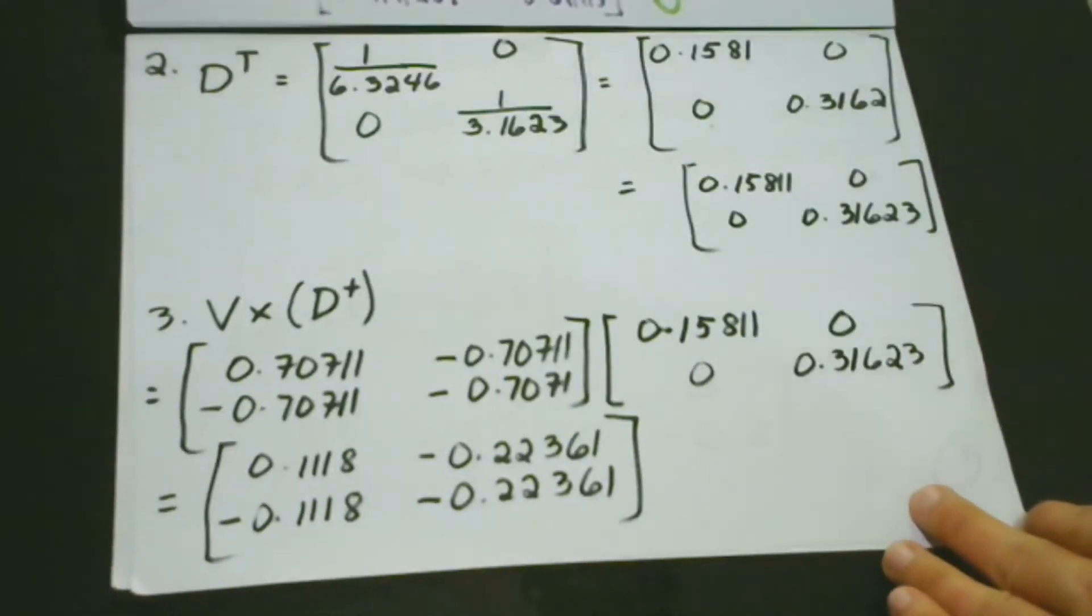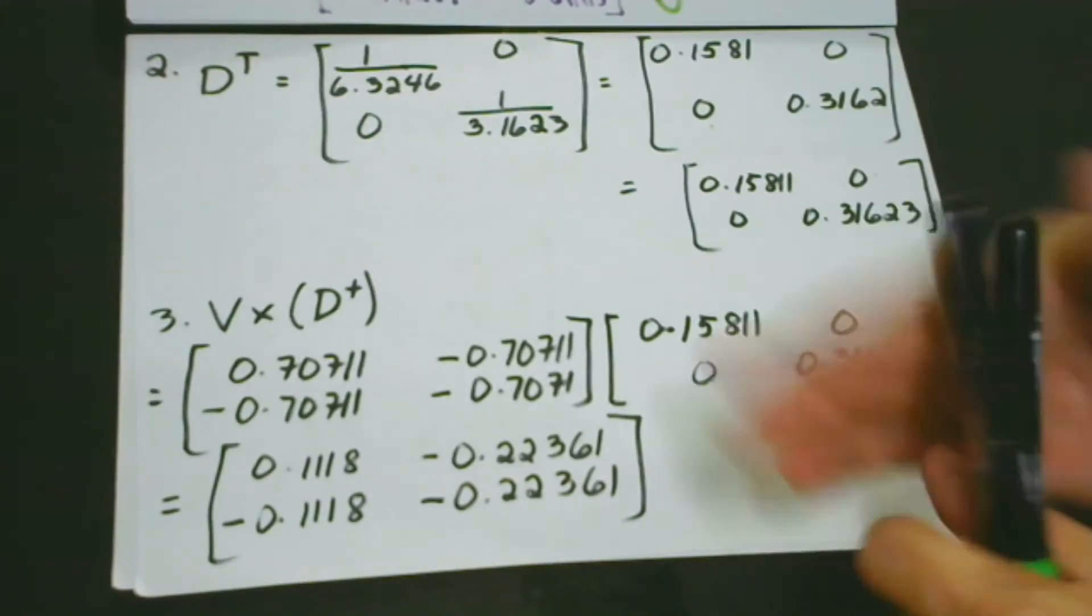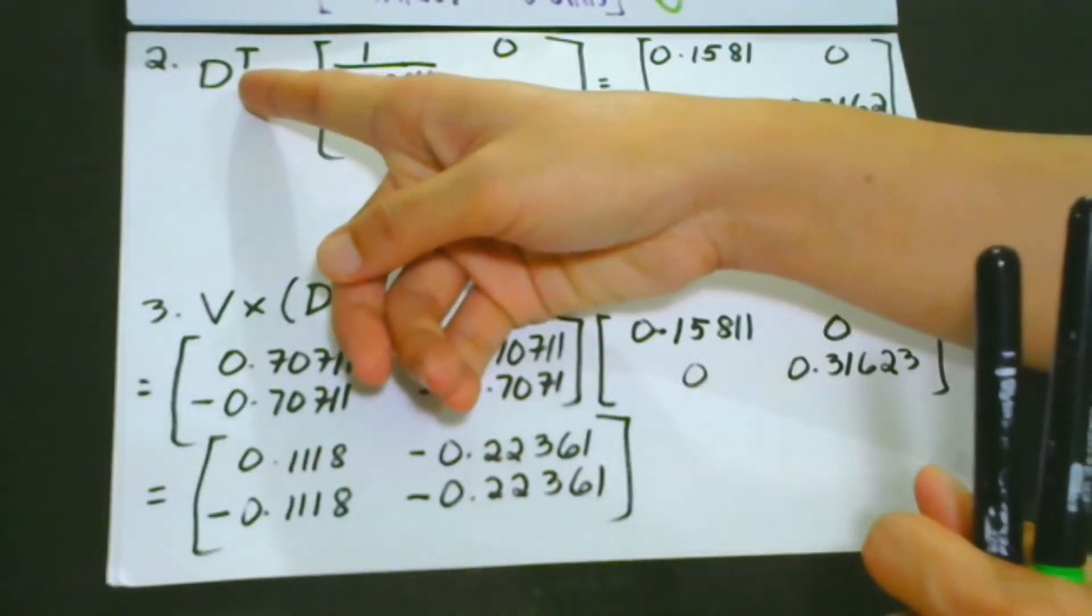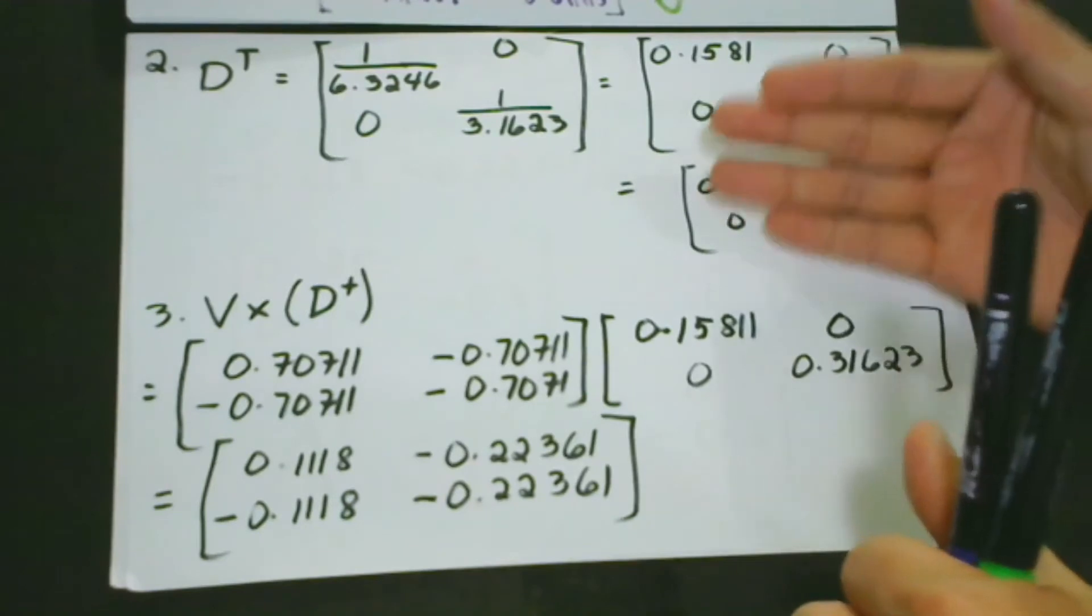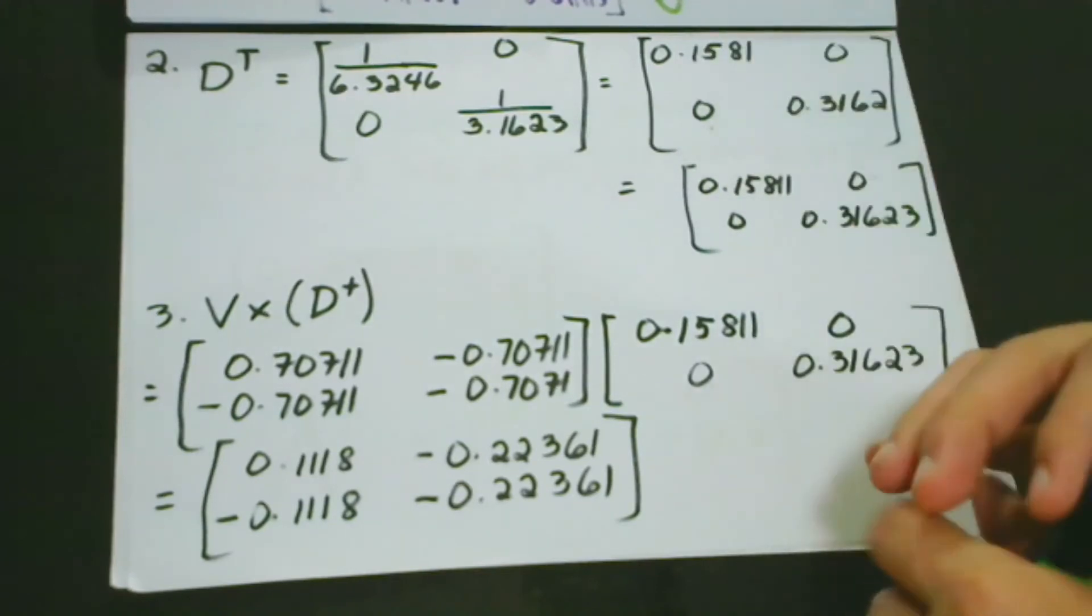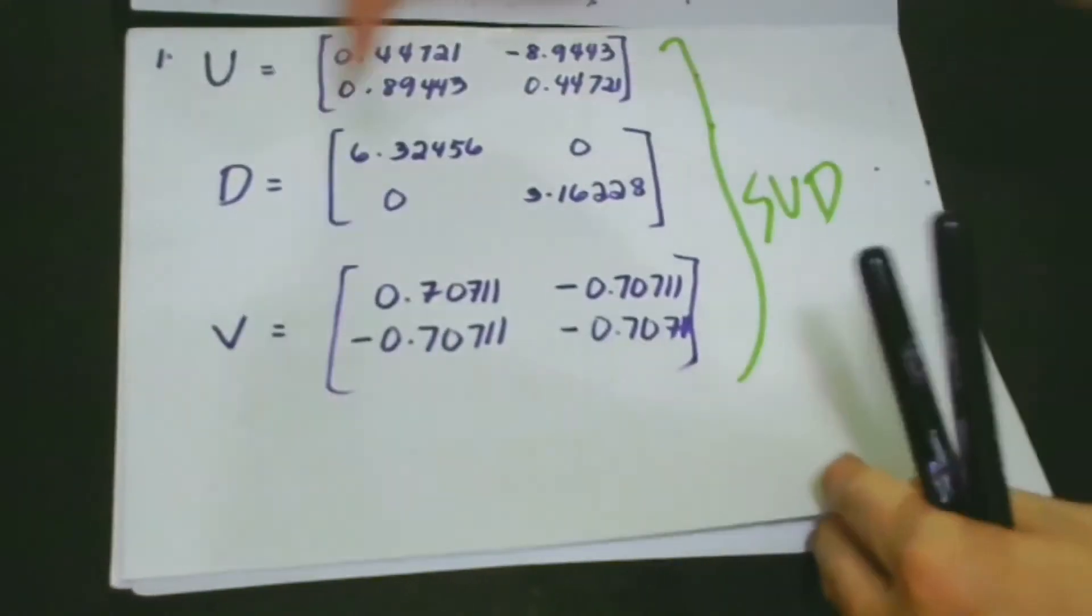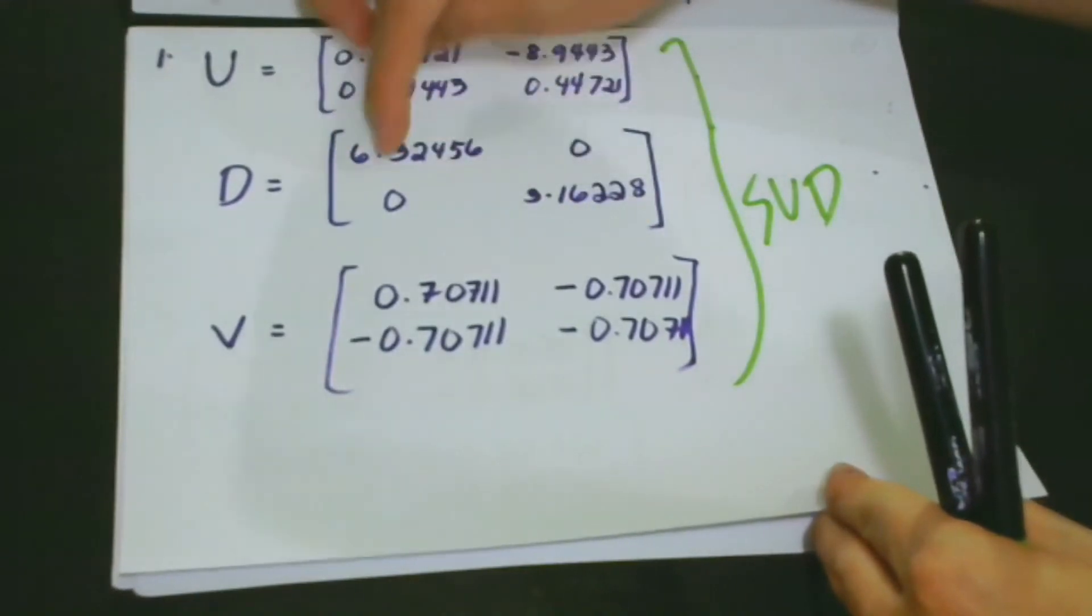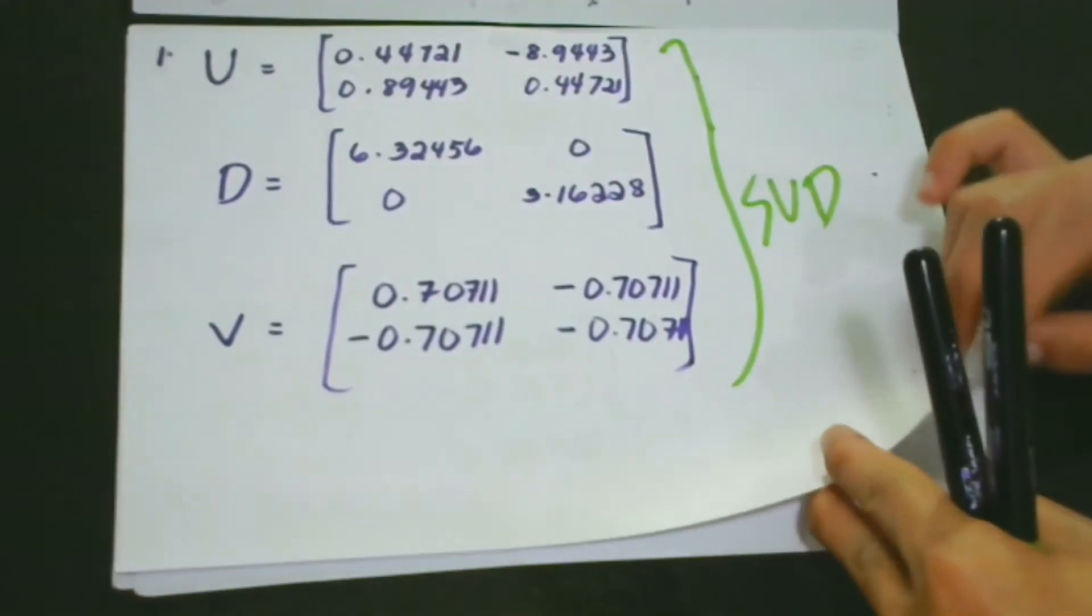Our second step is that we are going to get the reciprocal of D. This is obtained by taking the reciprocal of each non-zero values on the diagonal. What are the non-zero values in the diagonal? Let's go back to D. We have these non-zero values in the main diagonal. So we have 6.32456, 3.16228. So we're going to get the reciprocal.